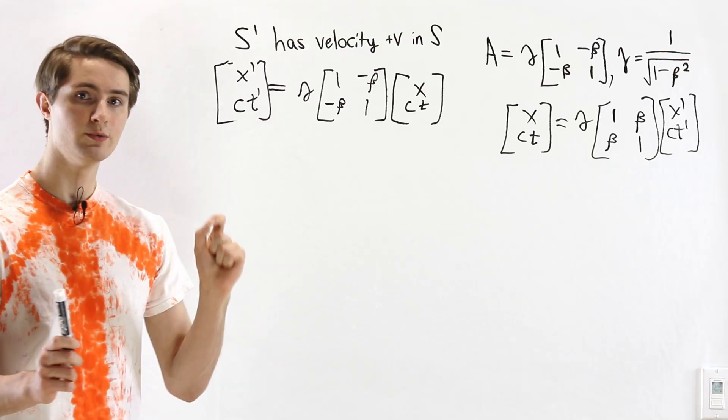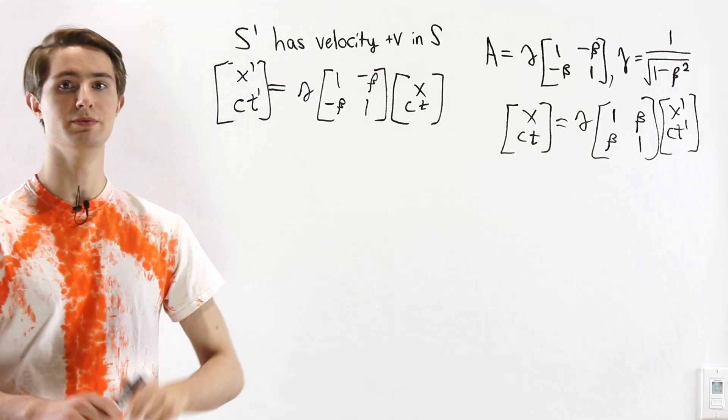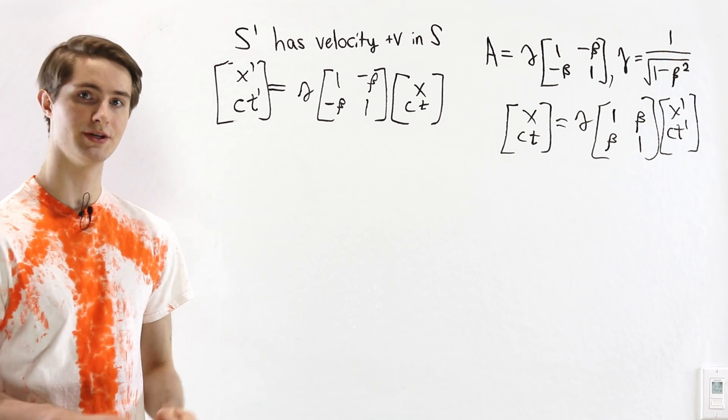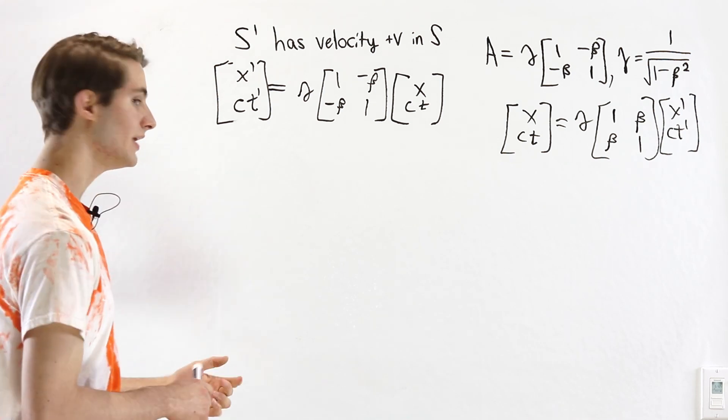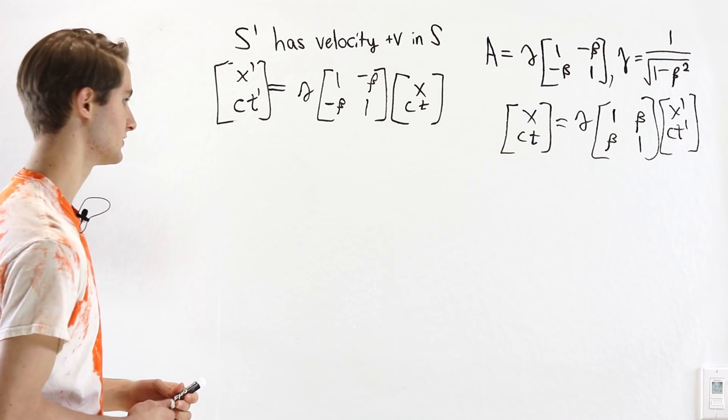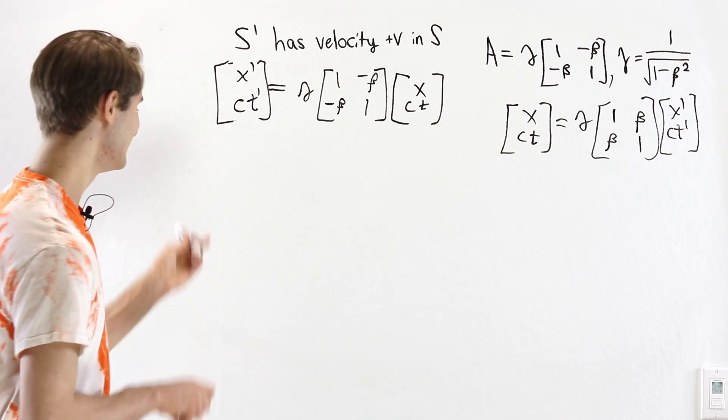The last thing I want to do here is explain why simultaneity has to be relative in order for special relativity to work. To do that, let's start by taking a look at a diagonal matrix, and we'll see why this is important in time.